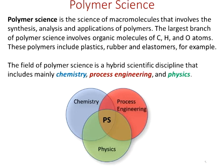The largest branch of polymer science involves organic molecules, and organic molecules consist of carbon, hydrogen, and oxygen for the most part. You will have some organic molecules that will have nitrogen and some other functionalities as well, but by and large, polymers in organic chemistry are identified with carbon, hydrogen, and oxygen. These polymers include plastics, rubbers, and elastomers as examples.